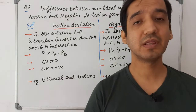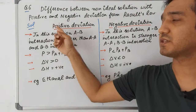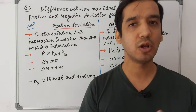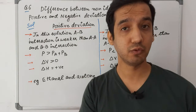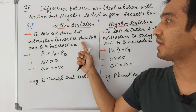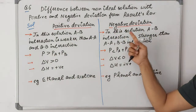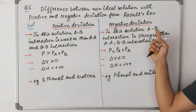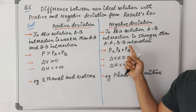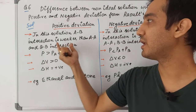Question 6: Differentiate between non-ideal solutions with positive deviation and negative deviation from Raoult's Law. In positive deviation, the A–B intermolecular force of attraction is weaker than the A–A and B–B forces. In negative deviation, the A–B intermolecular force of attraction is stronger than the A–A and B–B forces.